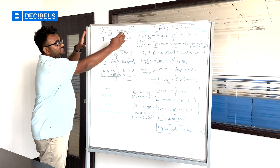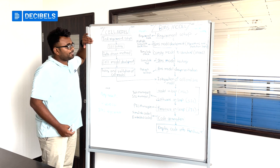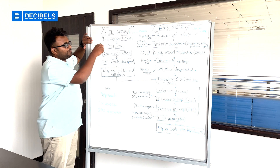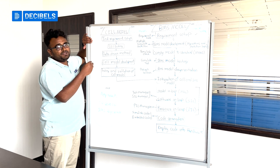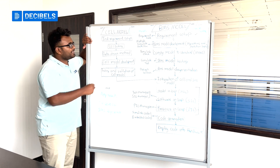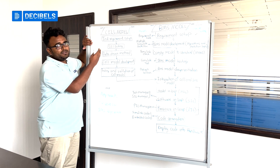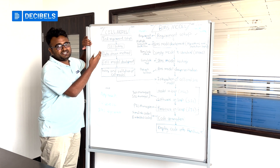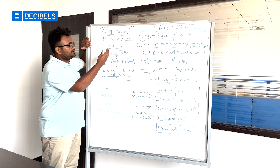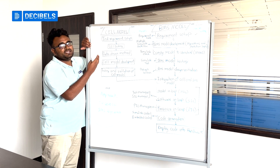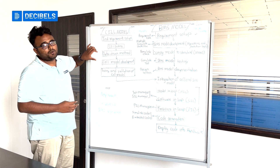In the plant model development, we will start with a test requirement setup. The objective is that you need to develop a cell model which has to behave as it would in real time. For that, you need to conduct testing for the cell, such as an HPCC test or a capacity test, where you will gather data. With that data, using a data-driven method and an equivalent circuit approach, you can proceed to cell model development.